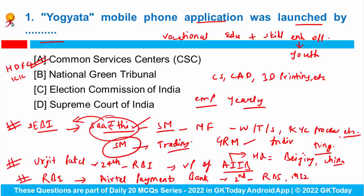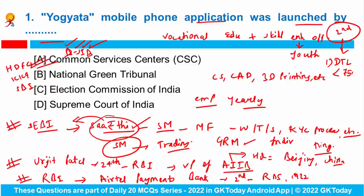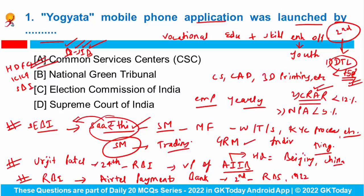HDFC, ICICI Bank, and SBI are to remain as DSIBs — Domestic Systemically Important Banks. To be included in the second schedule of RBI Act 1934, a bank must fulfill certain criteria: DTL (demand and time liabilities) should not be less than 750 crore rupees continuously for one year; CRAR (capital to risk weighted asset ratio) should be at least 12%; gross NPA (non-performing assets) should be less than 5%; and the bank should comply with statutory liquidity ratio and cash reserve ratio.